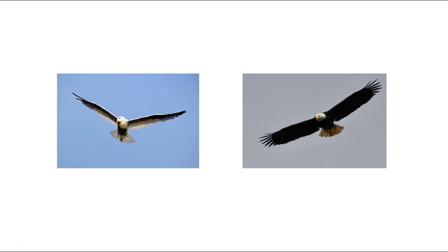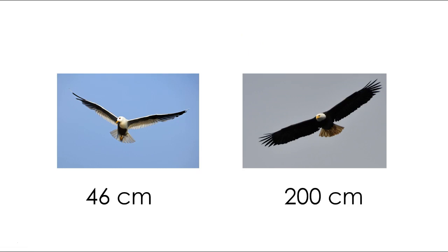I've got some birds here, and every bird has a different wingspan. The seagull has a wingspan of 46 centimeters and the bald eagle has a wingspan of 200 centimeters. Which bird has the longest wingspan? Did you say the bald eagle with 200 centimeters? You are absolutely correct — good job!